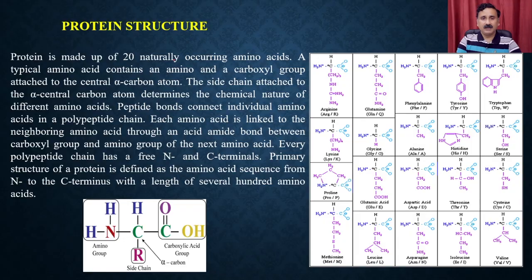In today's lecture, we are going to discuss more about the protein structures. Protein is made up of the 20 naturally occurring amino acids. A typical amino acid contains an amino group and a carboxyl group attached to the central alpha carbon.